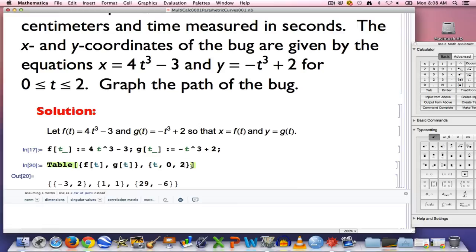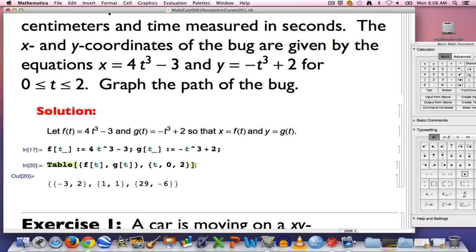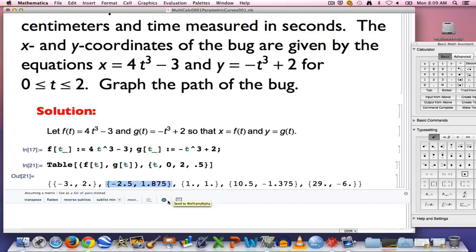If I want to find the output at more points, for example, at every half second of time, 0.5, 1, 1.5, and 2, I would need to put an extra comma .5 in here to see those extra points. For example, at t equals .5, the point that I would plot in the xy plane would be -2.5, 1.875.